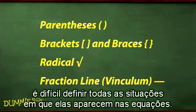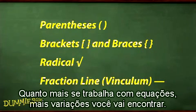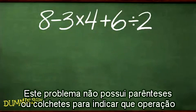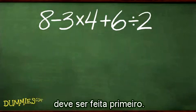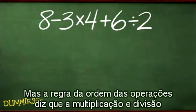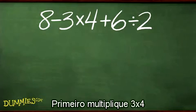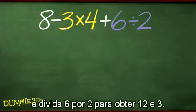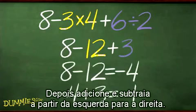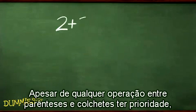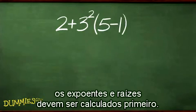Even though the order of operations and grouping symbol rules are fairly straightforward, it's hard to describe all the situations that can come up in problems. This problem doesn't have parentheses or brackets to indicate which operation needs to be done first, but the order of operations says multiplication and division need to be worked out before addition and subtraction. First, multiply 3 times 4 and divide 6 by 2 to get 12 and 3. Second, add and subtract in order from left to right.